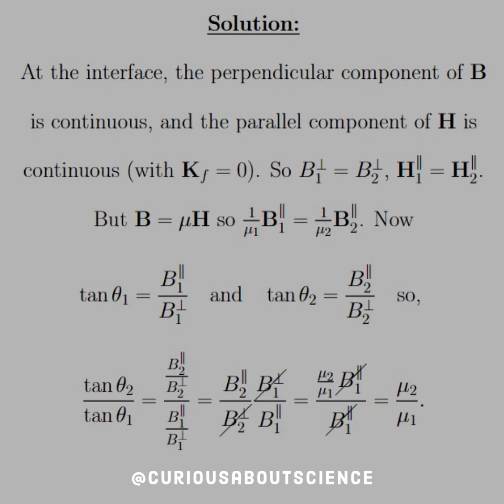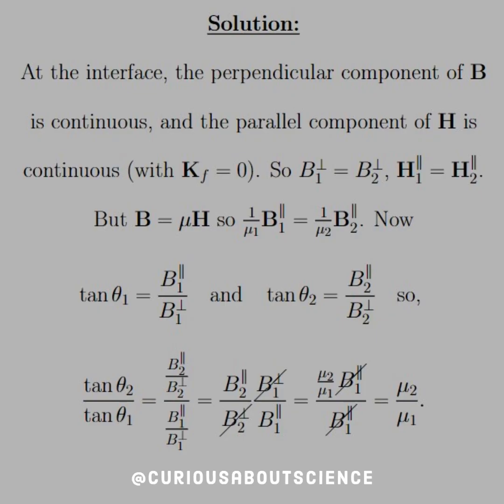All right, again, we've seen this before, so let's take into account our boundary conditions. So at the interface, the perpendicular component of B is continuous, which is stated by the boundary conditions, and the parallel component of H is continuous, given that the free bound current on the surface is zero, which is one of the assumptions to start.